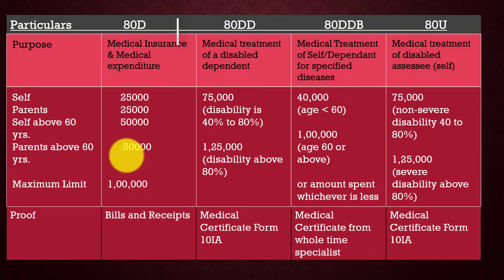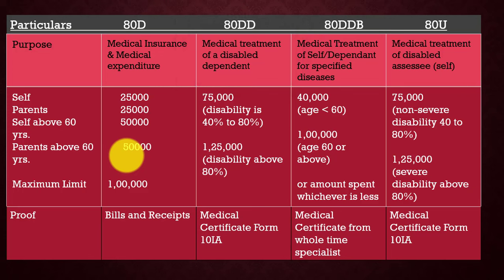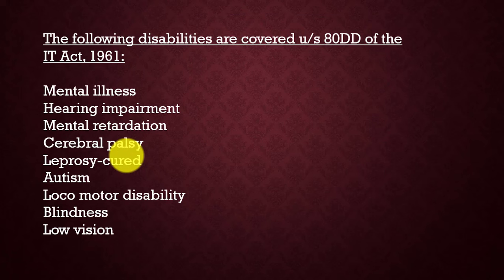After Section 80D, we come to Section 80DD, which covers medical treatment of a disabled dependent. We claim this deduction only for a dependent — it is not for self. In this section, specific diseases are specified for which we get the deduction. If the disability is 40% to 80%, we can claim a deduction up to ₹75,000. If the disability is more than 80%, we can claim up to ₹1,25,000, or whatever amount is less.